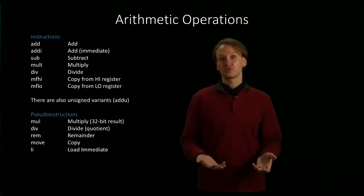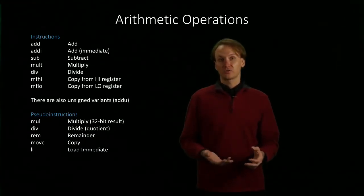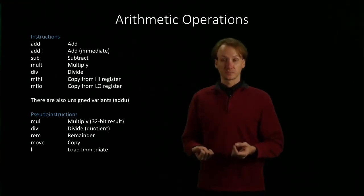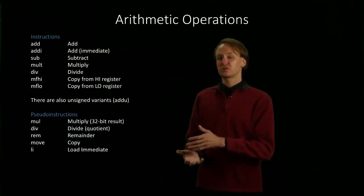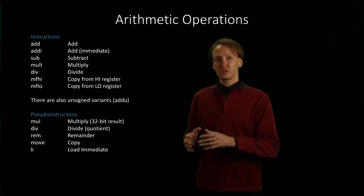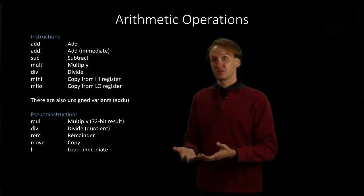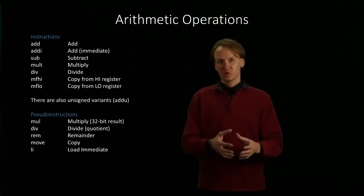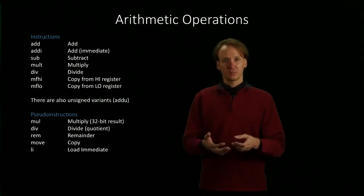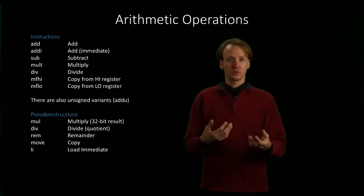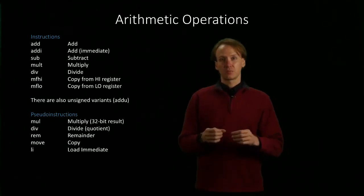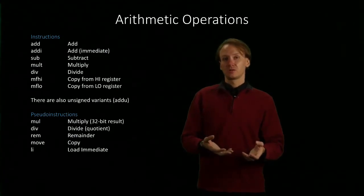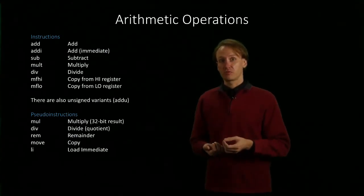The load immediate pseudo instruction is also a simple way of just putting some number into a register for you. Any time you put one of these pseudo instructions into your code, the machine doesn't actually know how to interpret this instruction. So these are actually instructions for the assembler, and the assembler will take them, translate them into one, two, or three instructions, and provide those real instructions to the CPU instead. This is where it would use the assembler temporary register as well.